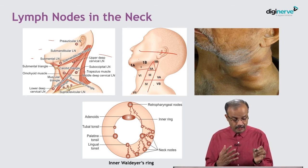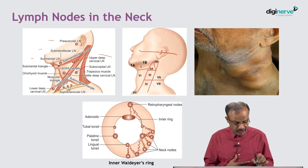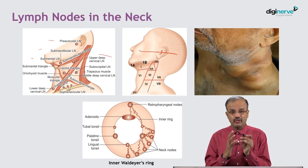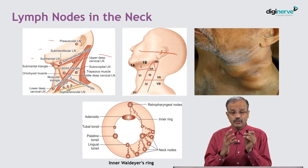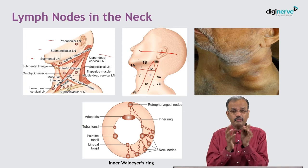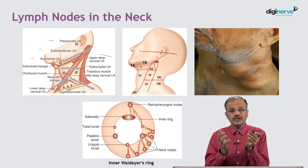There is what is called Waldeyer's ring — the inner Waldeyer's ring and outer Waldeyer's ring. It is a group of lymphatics located inside and outside the neck area. The outer Waldeyer's ring includes post-auricular, pre-auricular, parotid, occipital, and buccal nodes. It is important, but not as significant as the inner Waldeyer's ring.